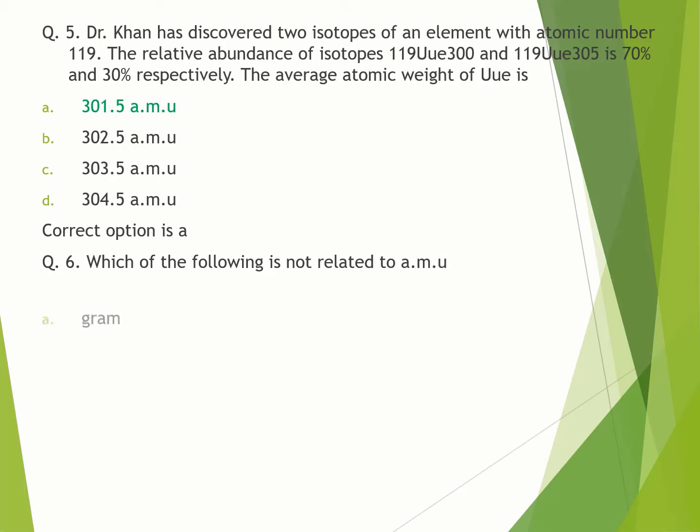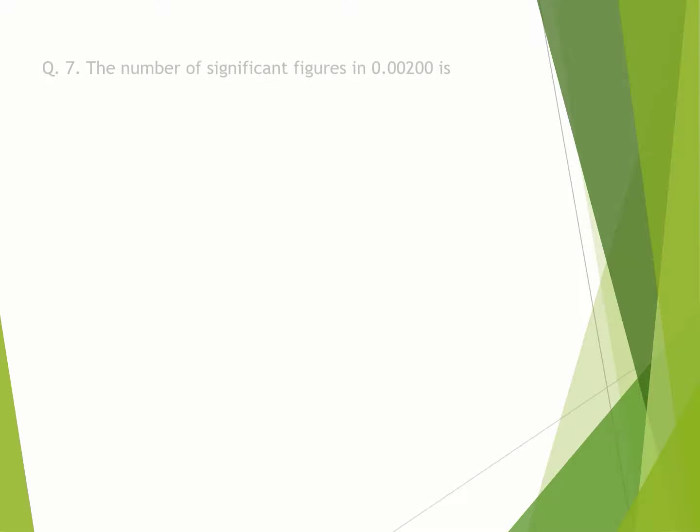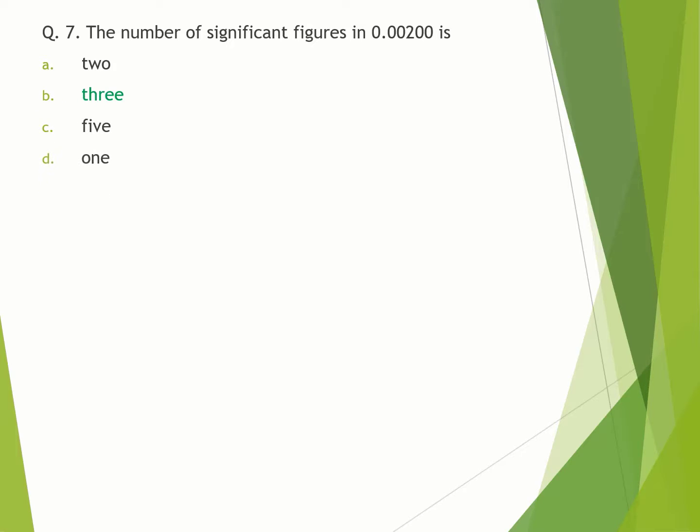Question number 6. Which of the following is not related to amu? A. gram. B. kilogram. C. microgram. D. gram. Correct option is D. Question number 7. The number of significant figures in 0.00200 is: A. two. B. three. C. five. D. one. Correct option is B.